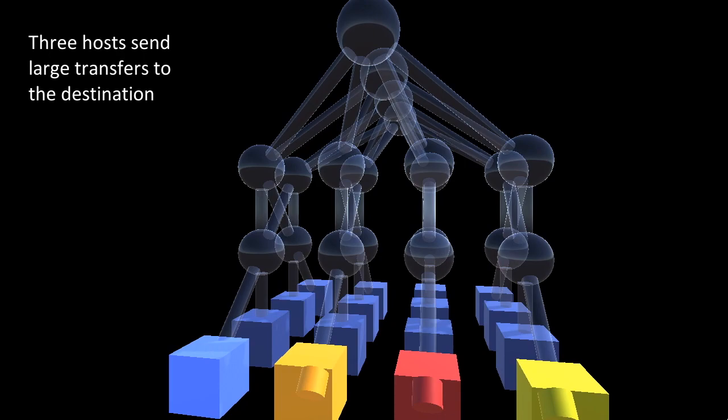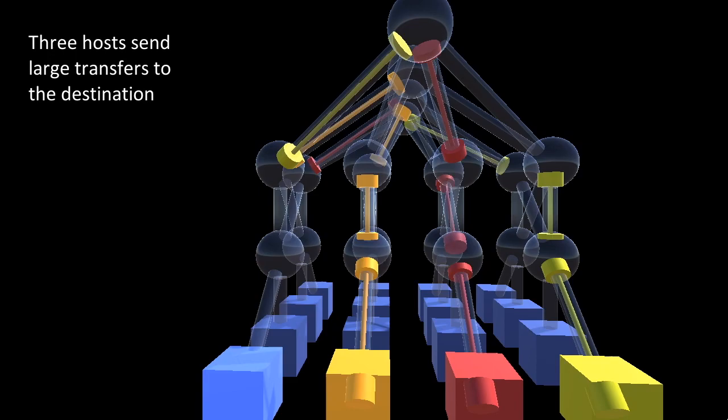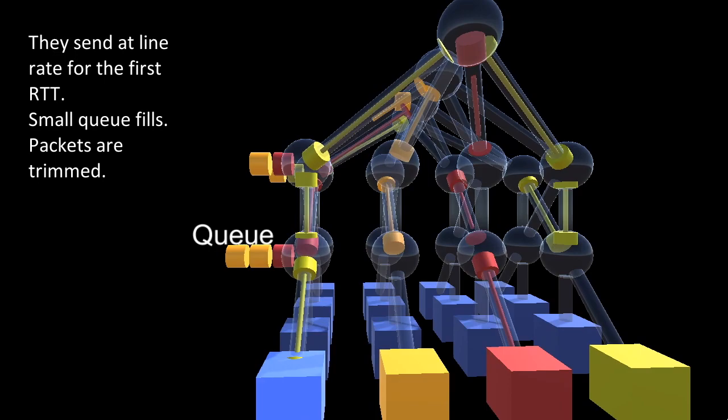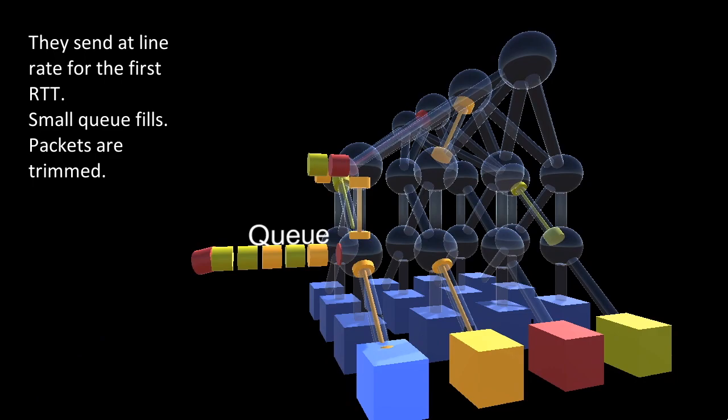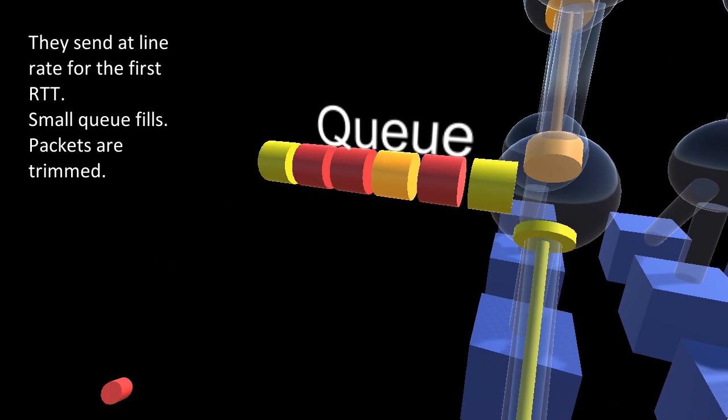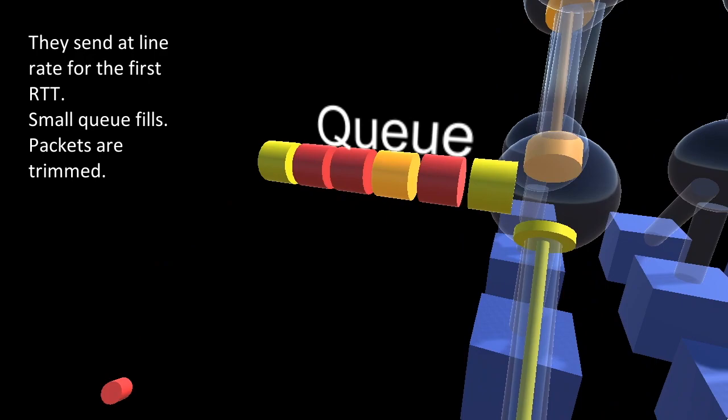Let's see it all in action. We've got three senders here, and send a whole window of data at line rate to the receiver. That small queue will fill, and packets are going to get trimmed. After the first round trip time though, the aggregate rate from the three senders exactly matches the link rate. No more trimming is going to be needed. You can see here, the aggregate rate of packets coming in is the same as the rate of packets going out. So, no more trimming is needed.